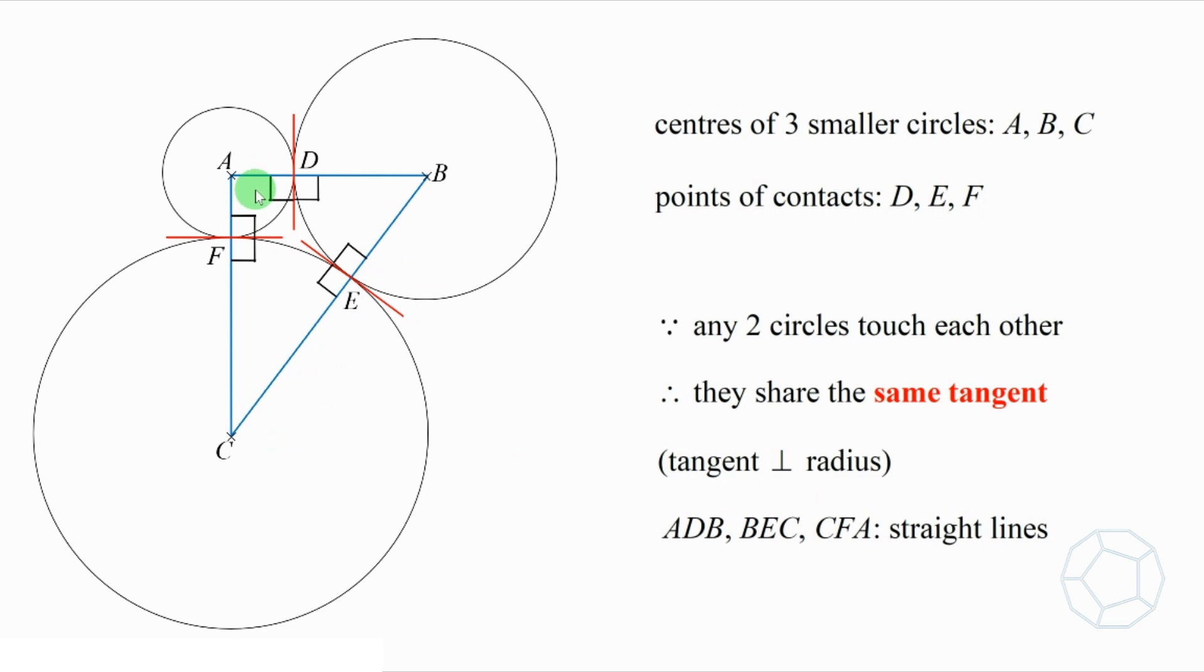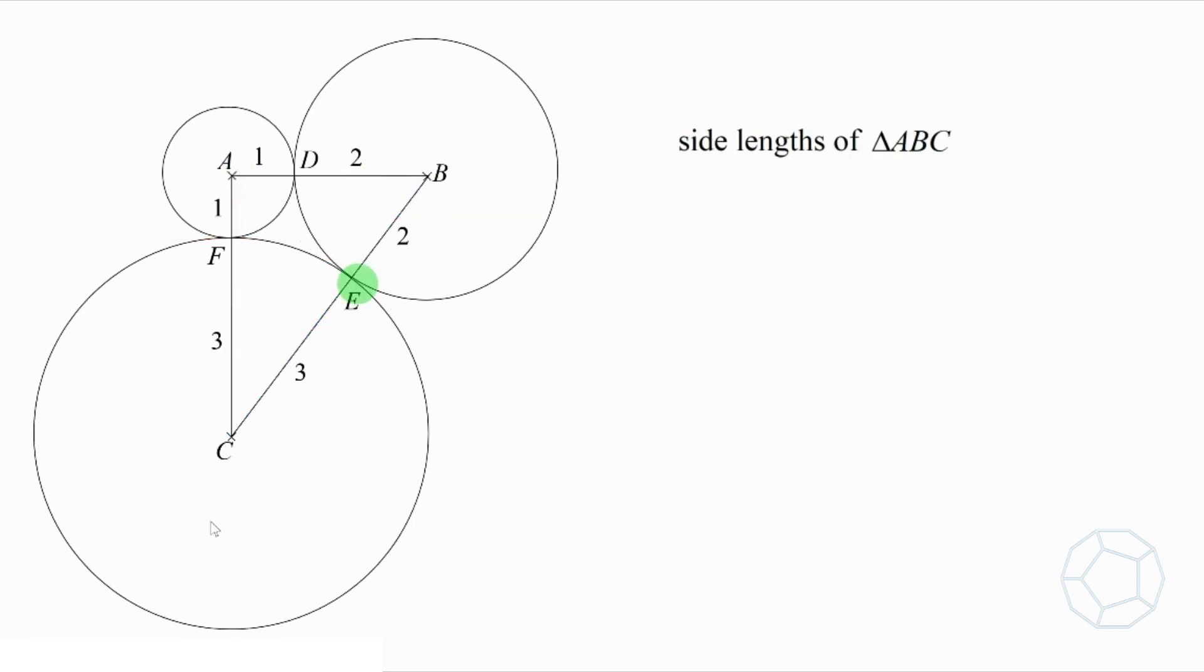So we have constructed triangle ABC. Now let's check out the length of the sides. We mark down the radii of the three circles in the figure. Then AB is equal to 1 plus 2, which is 3cm. AC is equal to 1 plus 3, which is 4cm.